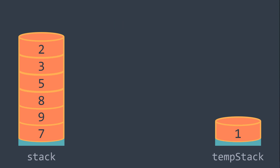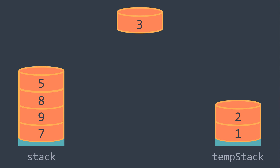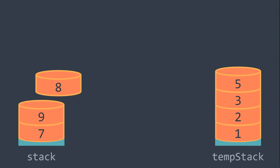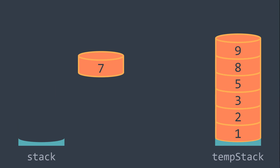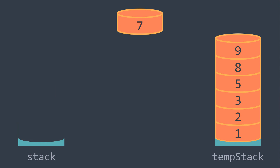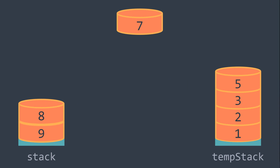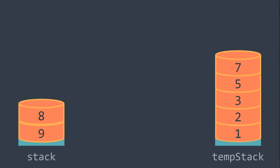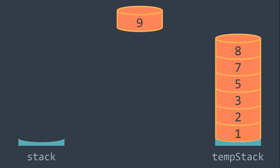We pop value 2 and we can directly push it. Same thing for 3, for 5, for 8, and for 9. Now we pop value 7: it's smaller than 9, so we take 9 to stack, same thing for 8. Now we can push 7 because it's not smaller than 5. We pop 8 — we directly push it. We pop 9 — we can also directly push it.